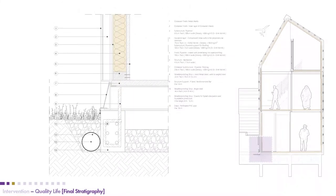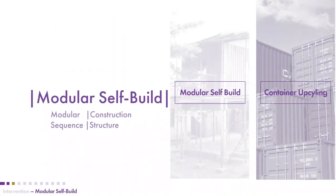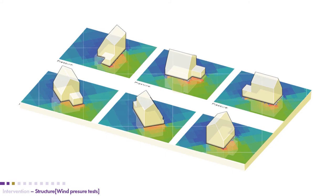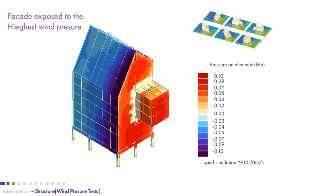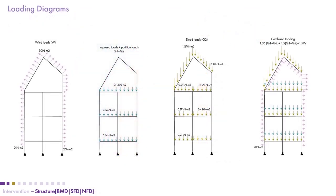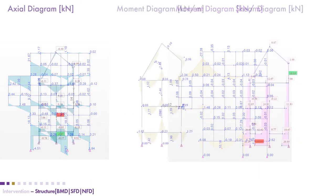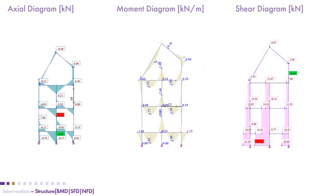For the self-built construction, we first ensured the structure could stand independently. We studied the direction to face the building to reduce wind pressures. We found that wind pressures were not as significant as the gravitational loads coming from the top of the structure, so we focused on those loads for our structural calculations. From there, we sized and designed the different wooden sections used for our light-frame construction.